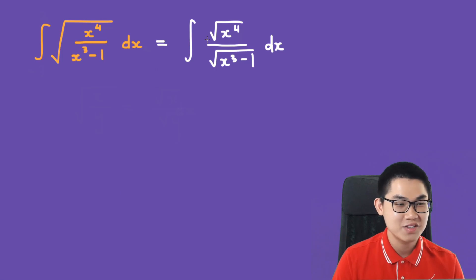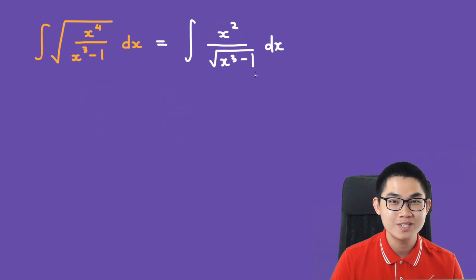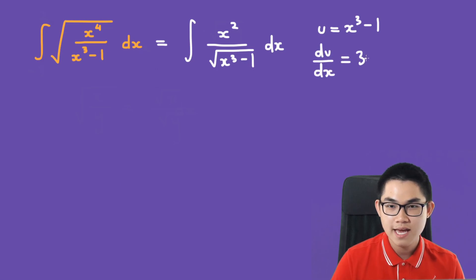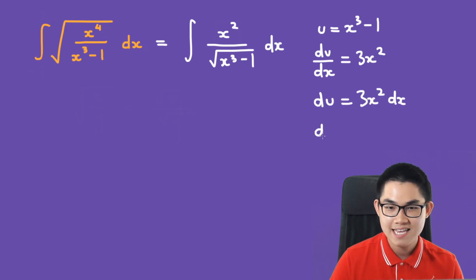The square root of x to the power of 4 is x to the power of 2. Then we use u-substitution. Let u equal x to the power of 3 minus 1. So du/dx is 3x to the power of 2, meaning du is 3x squared dx, and dx is 1 over 3x squared du.